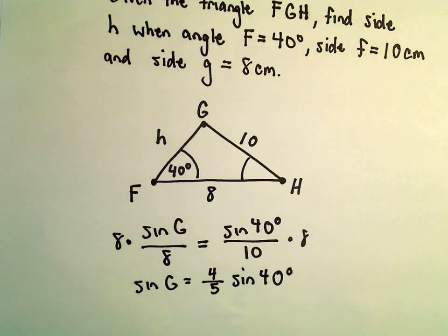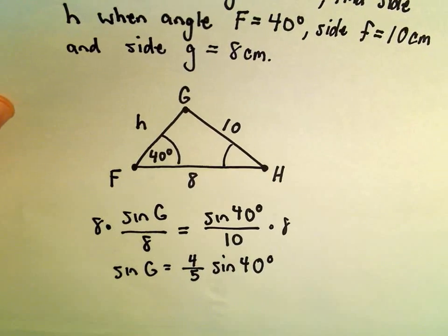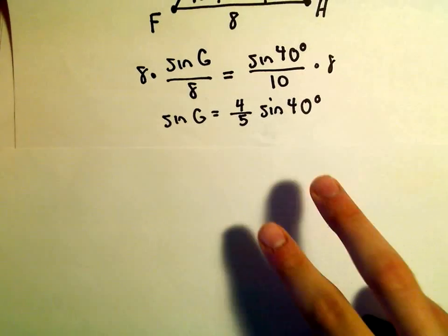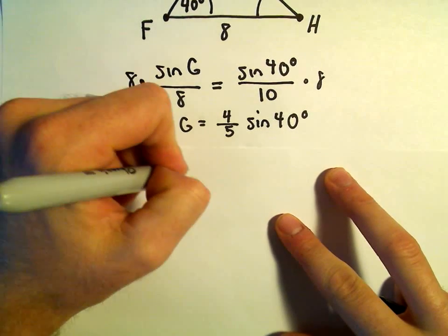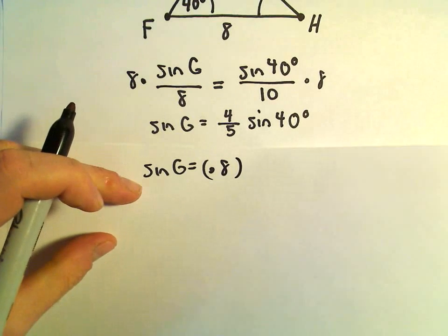So 4 divided by 5, that's simply just going to give us 0.8. So we'll get sine of G equals 0.8. And let's see, sine of 40 degrees. I'm going to round this here a little bit.